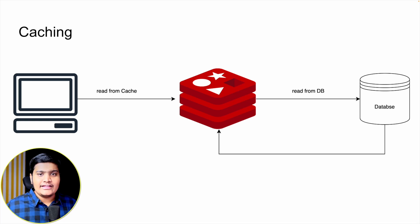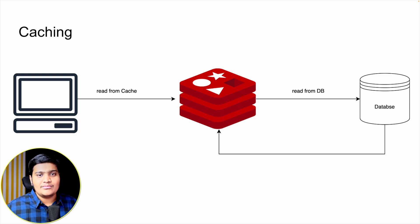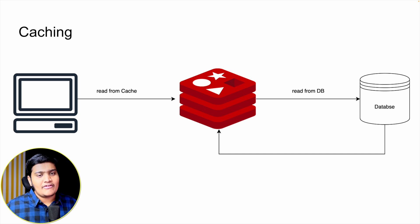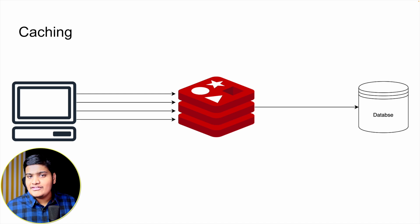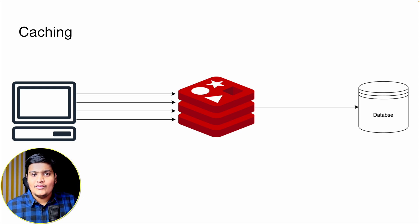There are multiple tools available to cache data — Redis, Memcache, and other tools. With those tools we can cache data, and if the data is available within the cache we can directly serve it from the cache itself. This saves a lot of heavy database queries and improves performance. You can see multiple calls are served directly from Redis and only one call goes to the database, which fetches the data and stores it in the cache.